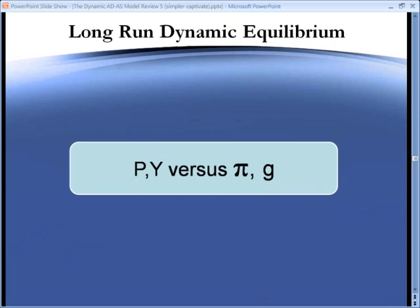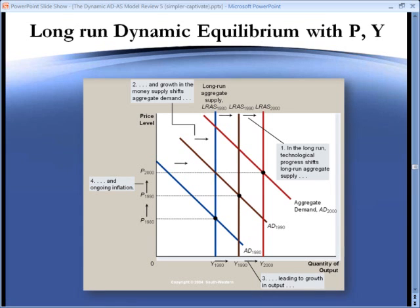Okay, let's show now how long-run dynamic equilibrium is much easier to understand in inflation growth space than it is in price level space. Here, using a graph from another famous textbook, is long-run dynamic equilibrium in price level space. As you can see, there are 1, 2, 3, 4, 5, 6 curves. There are many labels. It's really quite difficult to understand.